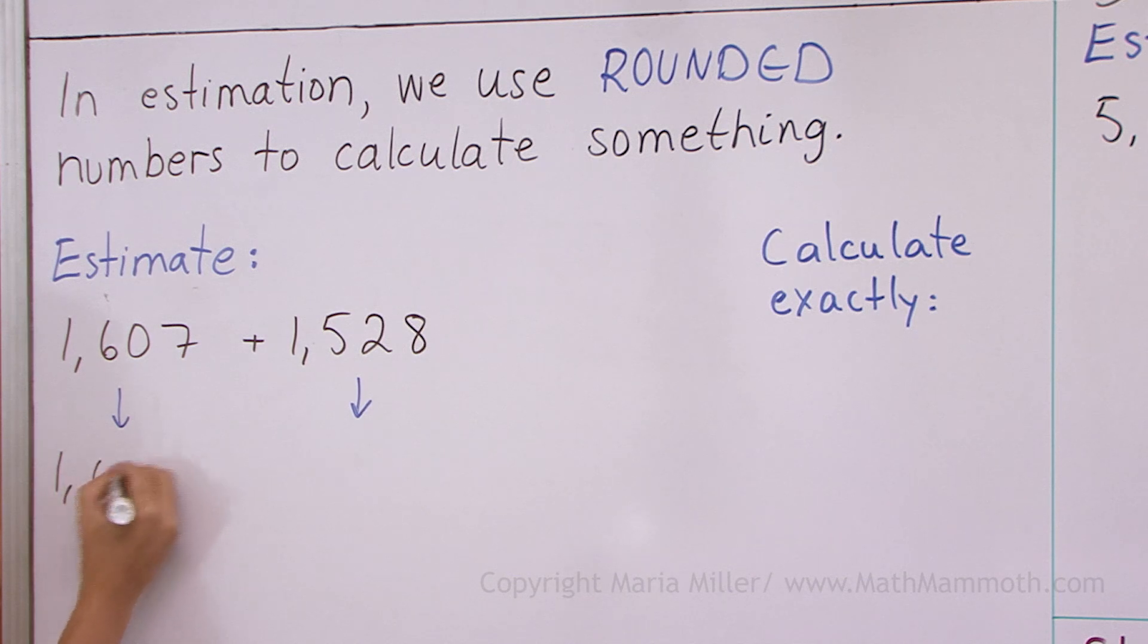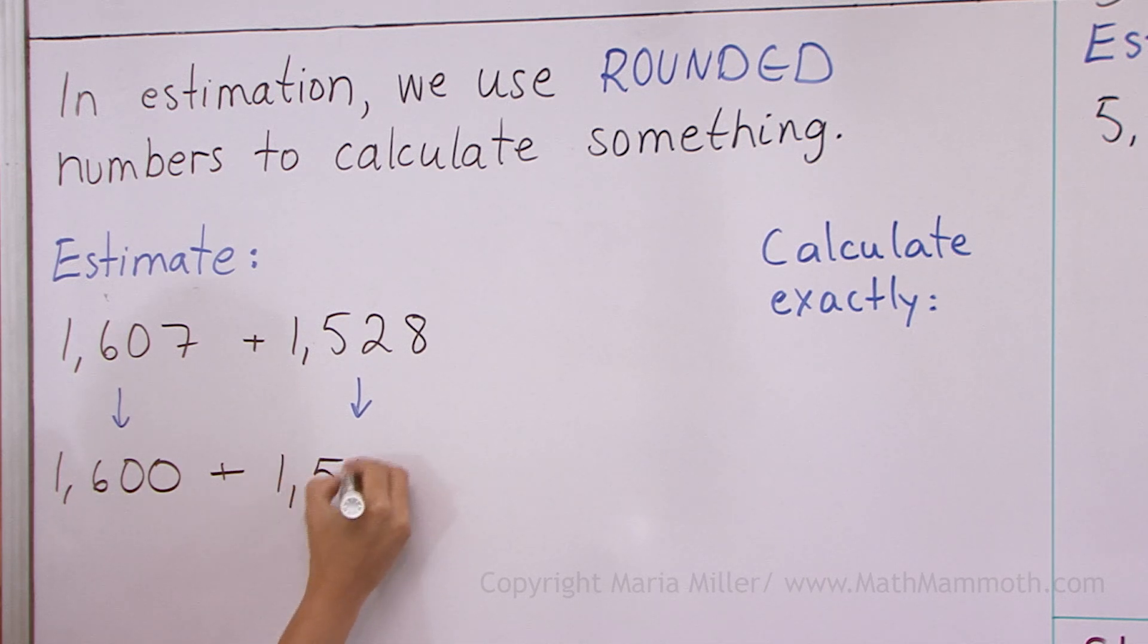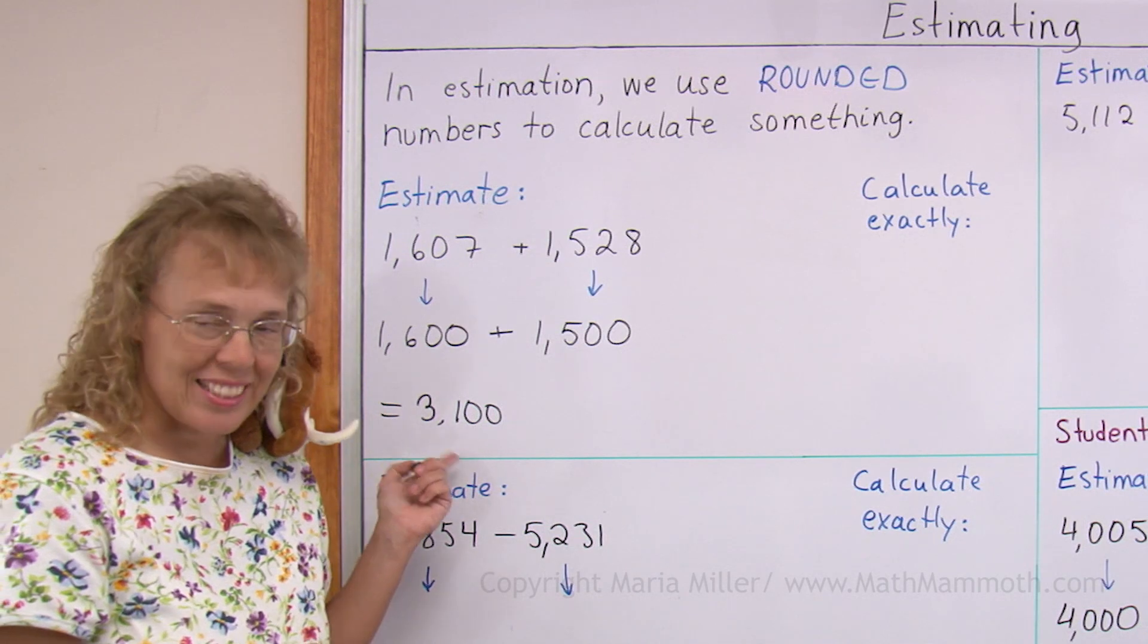It becomes 1,600. And this one also is rounded down, so we get 1,500. And then I add these and I get 3,100. This is my estimate.